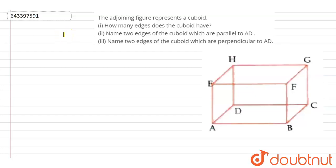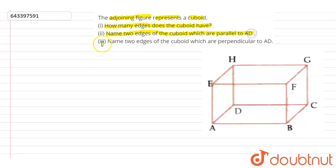Hello everyone, let us start the question. The question says: the adjoining figure represents a cuboid. How many edges does the cuboid have? Question number 2: name two edges of the cuboid which are parallel to AD. Question number 3: name two edges of the cuboid which are perpendicular to AD.